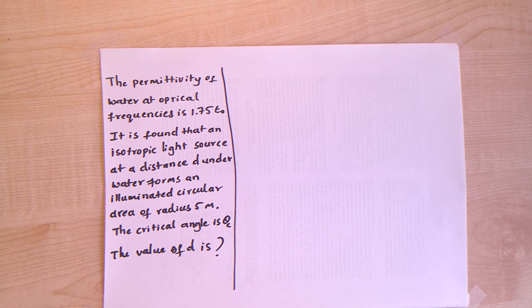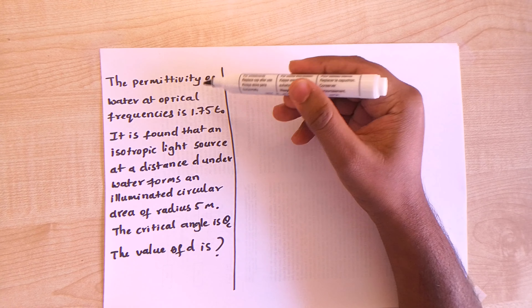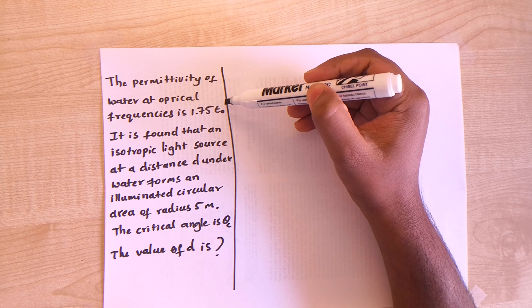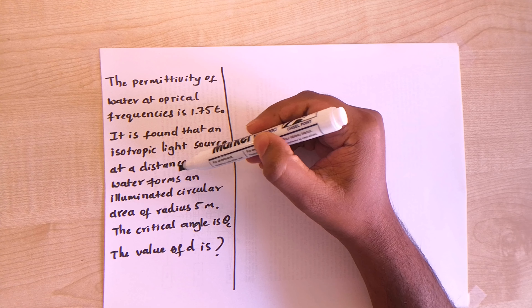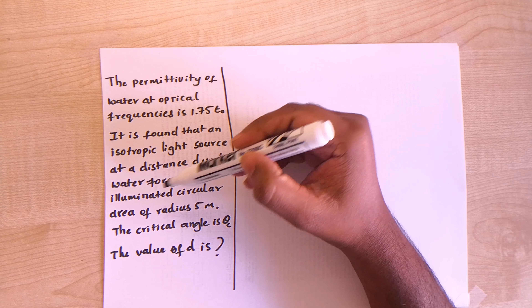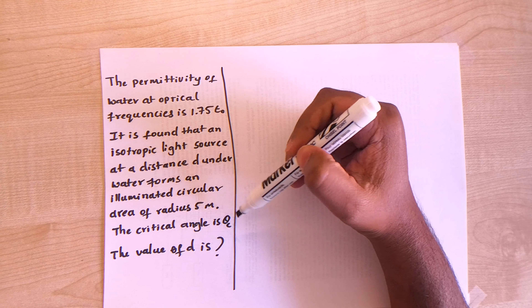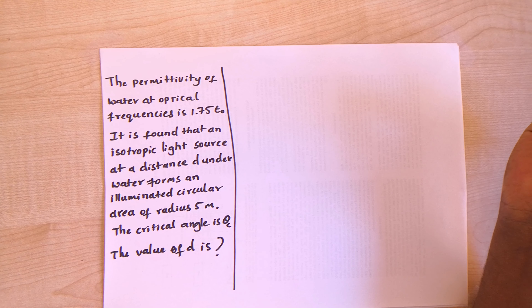Hi guys, welcome to Vedanta Education Academy where we solve engineering math and physics problems. Today I picked up another fun problem from GATE 2017 Electronics and Communication paper. The question reads: the permittivity of water at optical frequencies is 1.75 epsilon-naught. An isotropic light source at a distance d underwater forms an illuminated circle with a radius of 5 meters. The critical angle is theta_c. The value of d is?